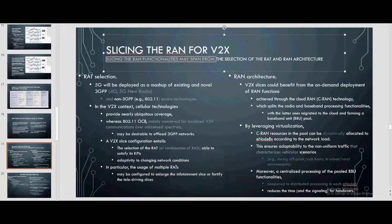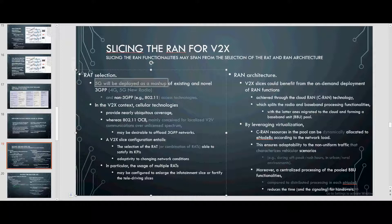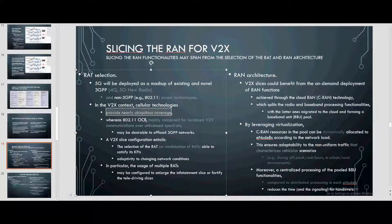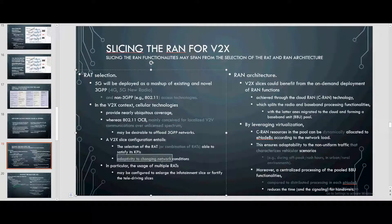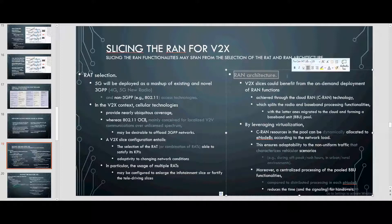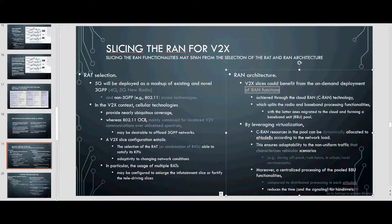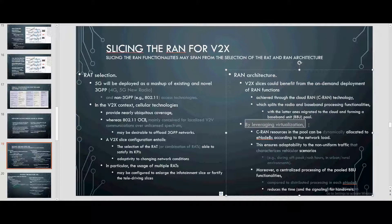Slicing the RAN for V2X. Slicing the RAN functionality may span from the selection of RAT and RAN architecture. For RAT selection, 5G will deploy a mashup of existing and novel 3GPP and non-3GPP access technologies. In the V2X context, cellular technologies provide nearly ubiquitous coverage, whereas 802.11 OCB may be used to offload 3GPP networks. A V2X slice configuration involves the selection of the RAT able to satisfy KPIs and adapt to changing network conditions. For the RAN architecture, Cloud RAN (C-RAN) technology splits baseband functionality, with the baseband unit pool (BPU) migrating to the cloud. Through virtualization, cellular resources in the BPU pool can be allocated according to network load, improving adaptability to non-uniform traffic scenarios. Moreover, centralized processing of BPU functionalities reduces time and signaling overhead for handovers.